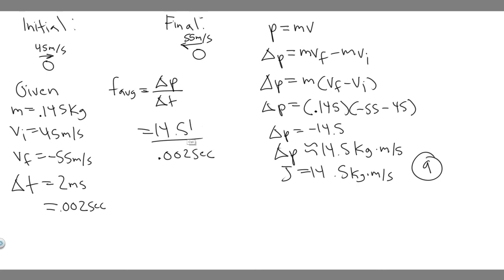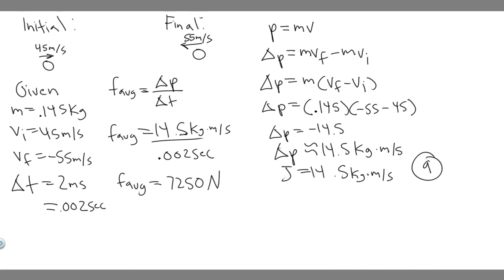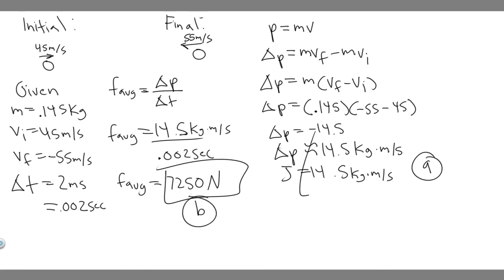So we divide 14.5 kilogram meters per second by 0.002 seconds, which gives 7,250 newtons. That is the magnitude of the average force applied by the bat — the answer to part B.